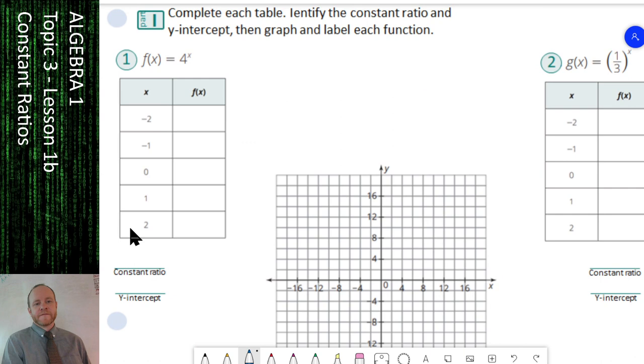Complete each table. That's the first thing we're going to do. Identify the constant ratio as well as the y-intercept. Then we're going to graph our values here, our ordered pairs, and label the name of the function. So to fill out this table, we're going to use our function. In this case, it is 4 to the power of x.